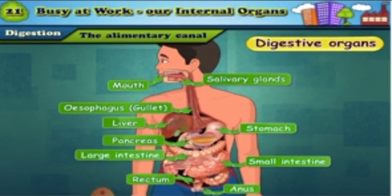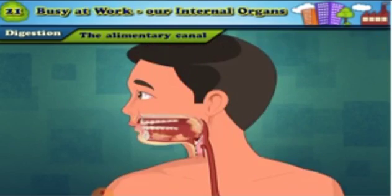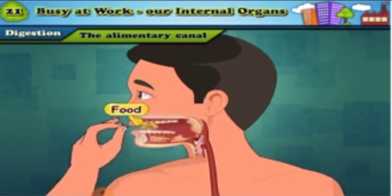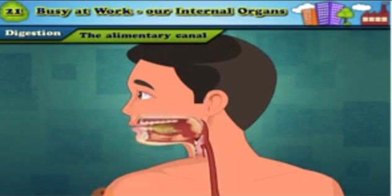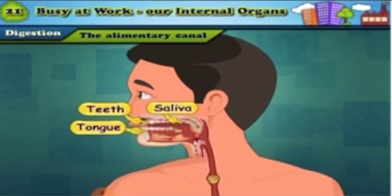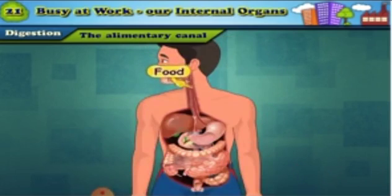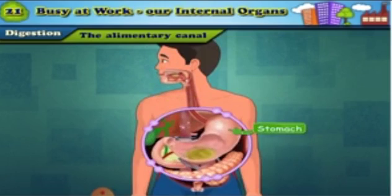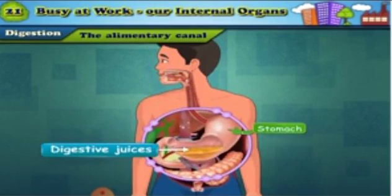The process of digestion begins as soon as food is taken into the mouth. The teeth, tongue, and saliva convert the food into a soft, moist ball called a bolus, which is easy to swallow. The bolus reaches the stomach through the esophagus. The stomach is shaped like a bag. The glands in the stomach secrete digestive juices, which mix with the food and bring about some digestive processes. At the same time, some disease-producing germs in the food are also destroyed here.